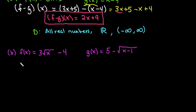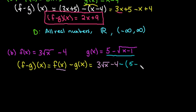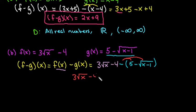For the next one, we're still finding f minus g of x — that just means take your f of x equation and subtract your g of x equation. So f of x is 3 radical x minus 4, and then we subtract our g of x equation: 5 minus the square root of x minus 1. Again, pay very close attention to your signs — we do have to distribute this in. So we would have 3 radical x minus 4, minus 5, plus the square root of x minus 1. We don't distribute inside of the radical, just to the outside, so a negative times a negative gives us a positive.